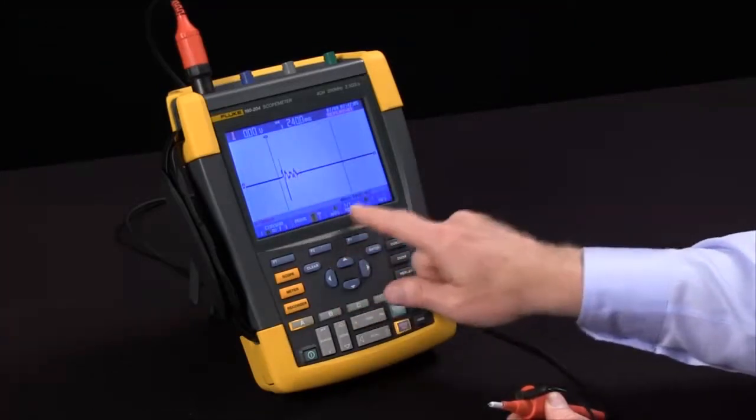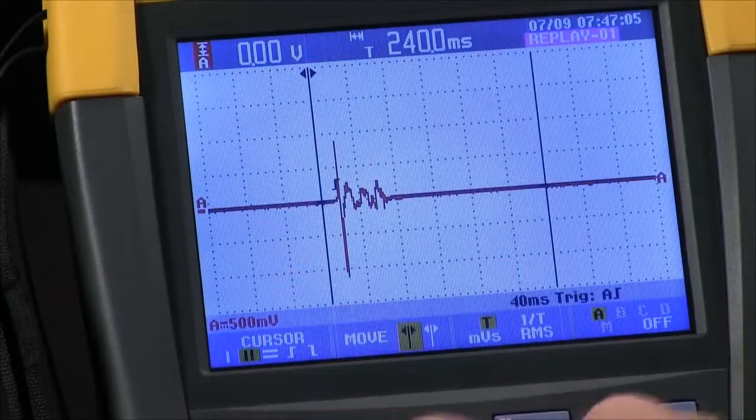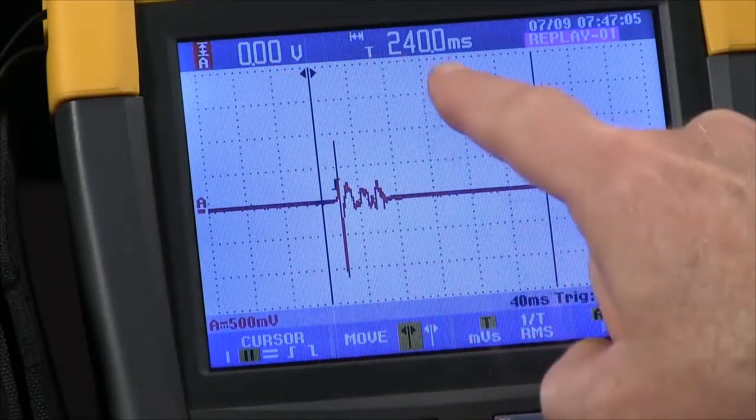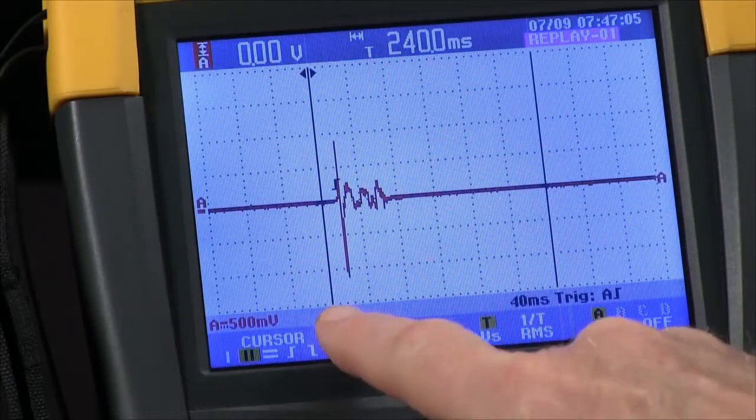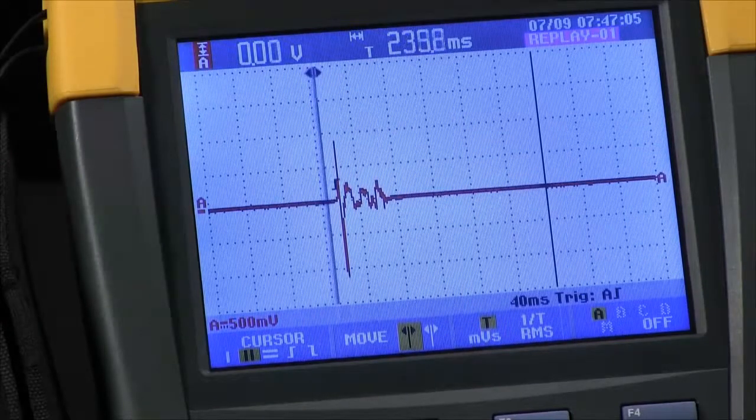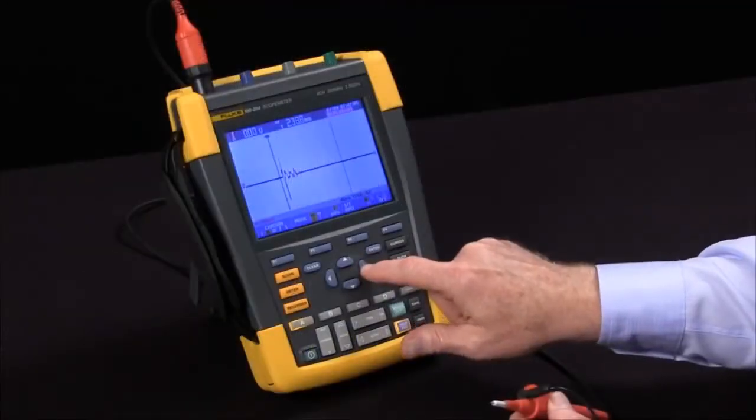We have two cursors initially that are set up to measure delta time and delta volts. We've got your voltage up here and your time up here. The first cursor with the arrows I'll move to the start of the waveform.